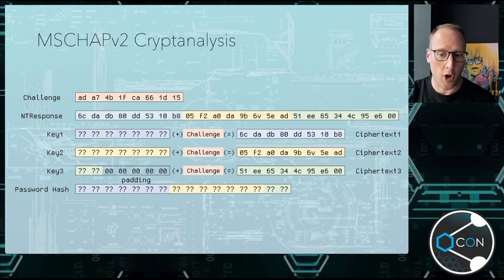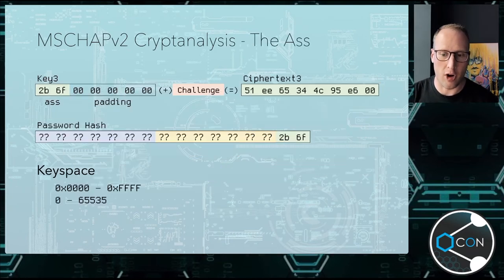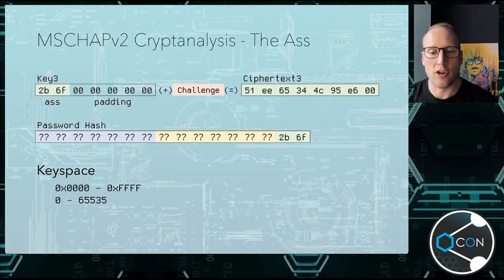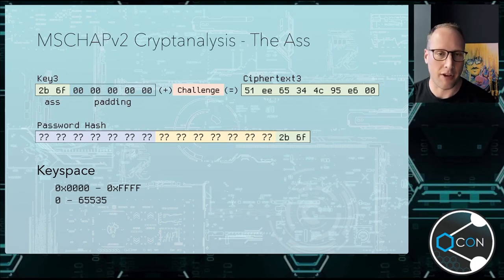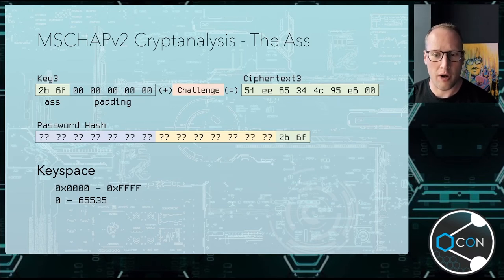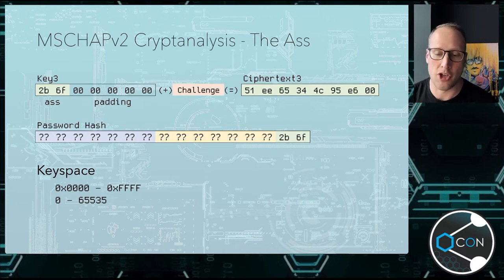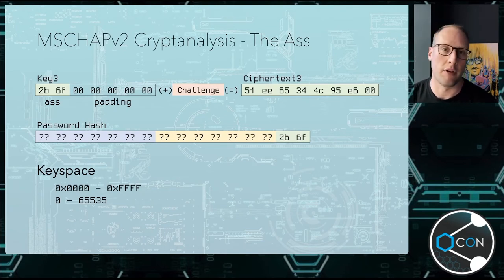When we're cracking this, we're going the other way around. We've got the challenge and the NT response and we're trying to get the password hash. We know this is three DES operations, so we need to figure out these three keys. The thing that pops out most obviously is key three, which has these two bytes that are padded. We can brute force them because the key space for that is only 65,535 - DES operations are pretty efficient on modern hardware, so that's not a lot of DES operations. We can brute force those two bytes and get the last two bytes of the password hash, then recover the other two keys.